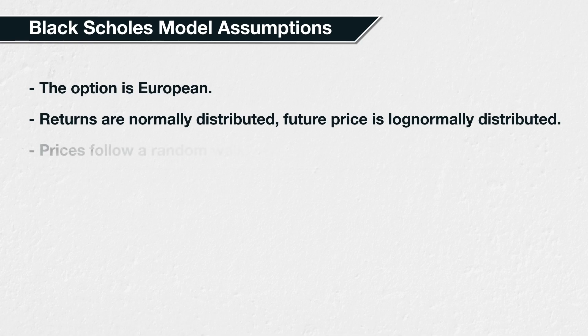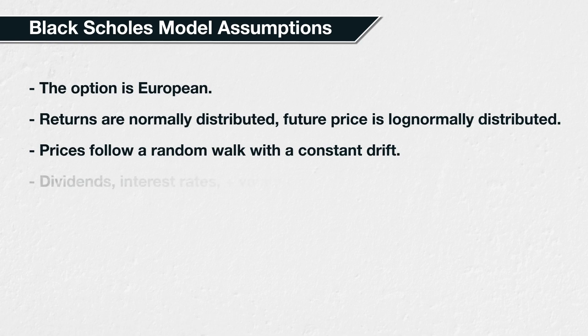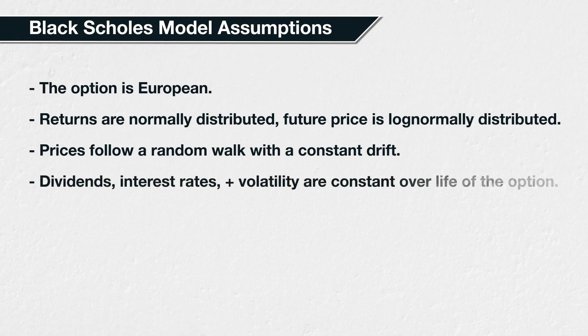Prices follow a random walk with a constant drift. In other words, the underlying price movements can't be predicted. The model assumes dividends, interest rates, and volatility are all constant over the life of the option. In reality, dividends and interest rates may or may not stay constant over the life of an option, but the volatility almost certainly will not.